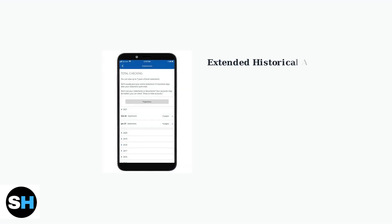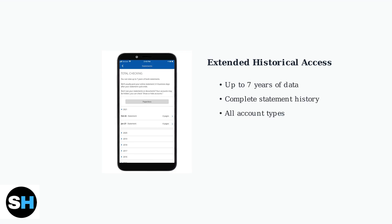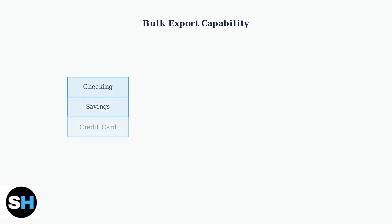One major advantage of Chase Online Banking is access to extended historical data — up to seven years for some account types — compared to the mobile app's typical two-year limit. Chase Online Banking also supports bulk exports, allowing you to download transaction history from multiple accounts simultaneously.